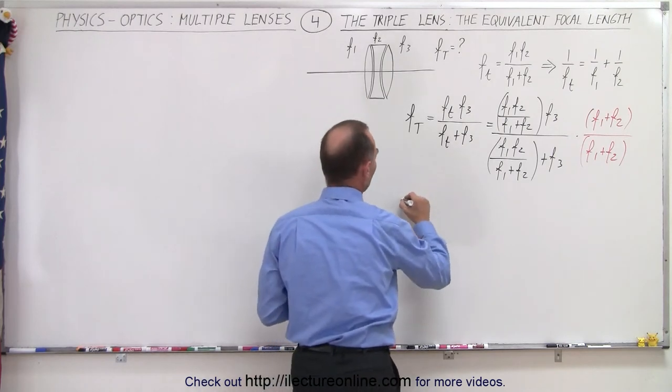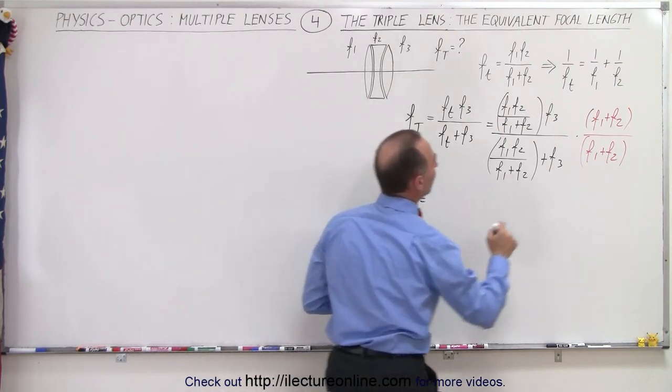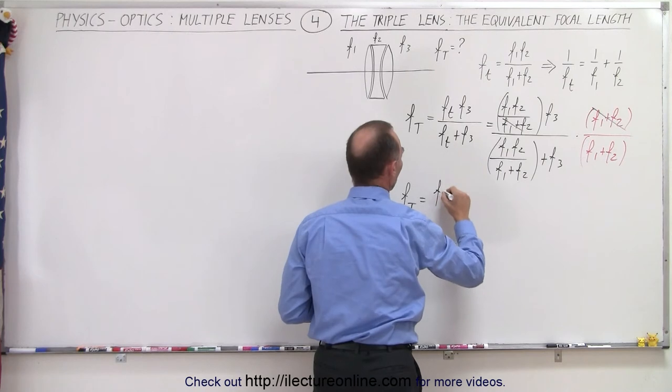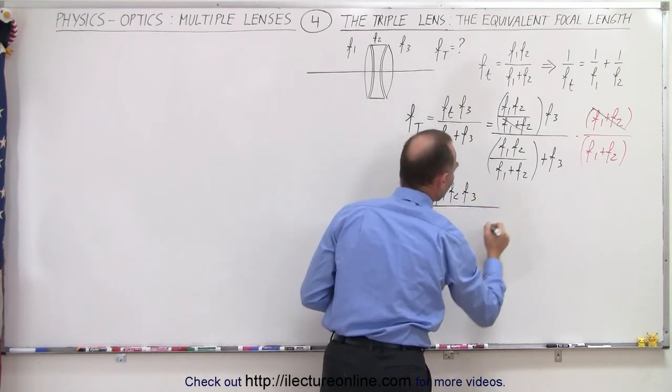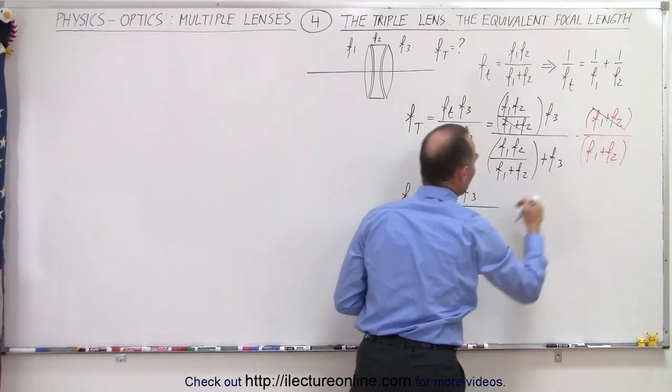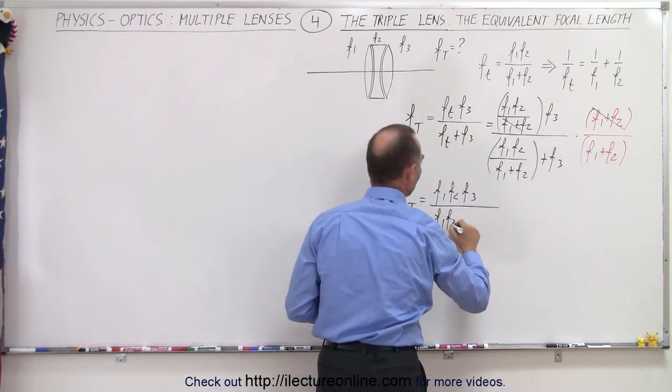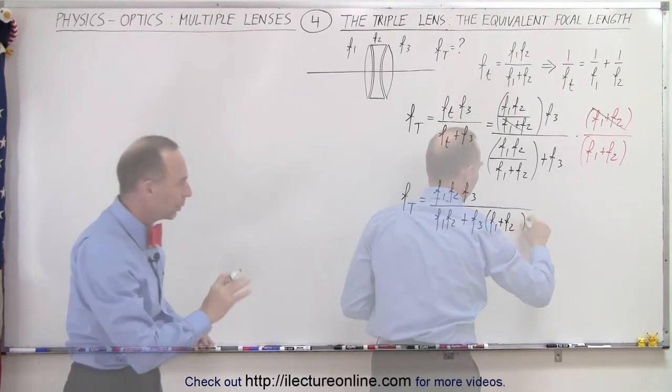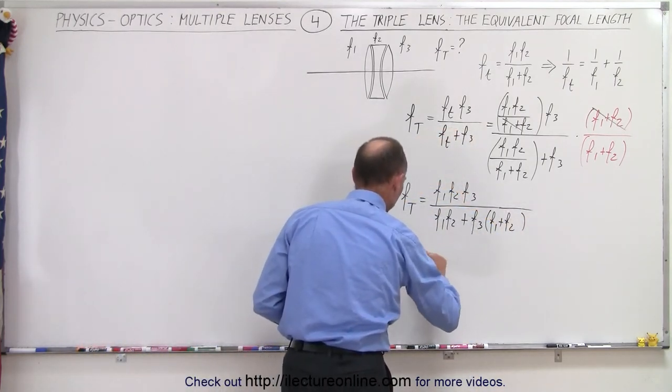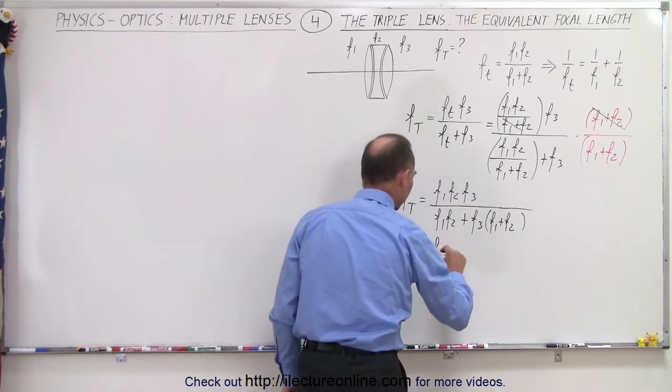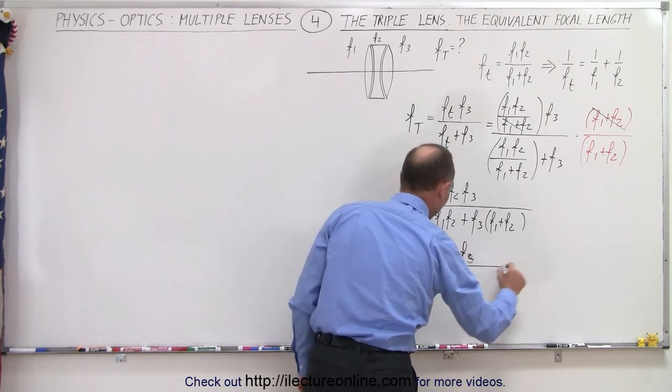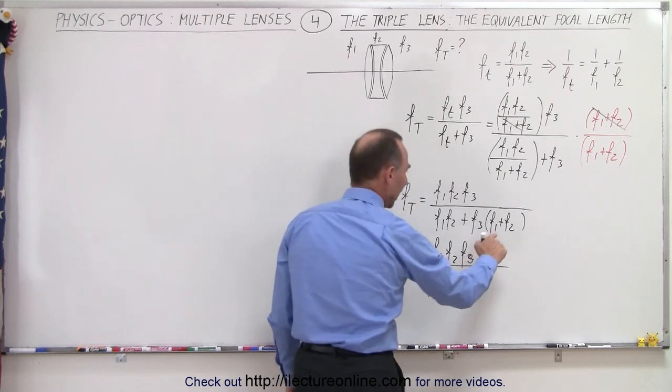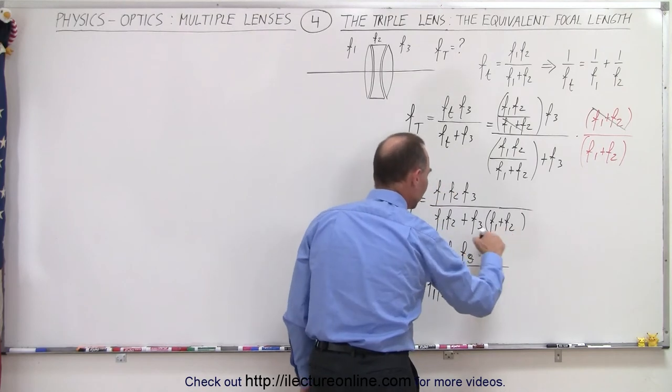So now we have the total focal length of all three lenses to be equal to, this times this will cancel that out. So this will cancel out with this, and we're left with f1 f2 f3 in the numerator divided by, in the denominator, this will cancel out with that. That leaves us with f1 times f2 plus f3 times f1 plus f2, plus f2 times f3.